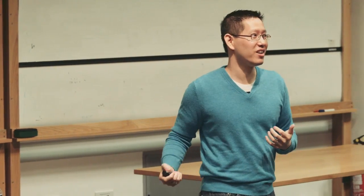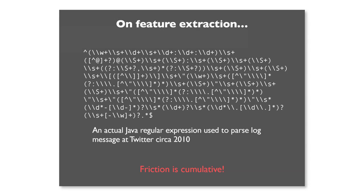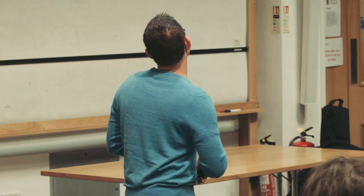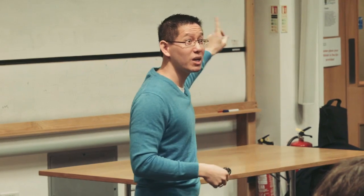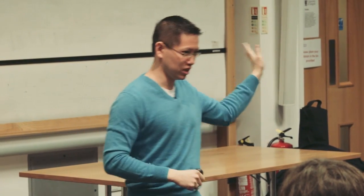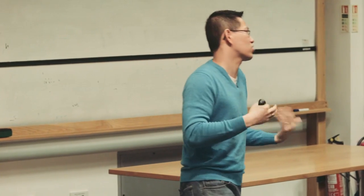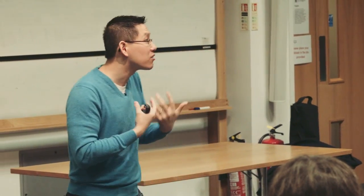Another example: feature extraction. You end up doing feature extraction with something like an actual Java regular expression I dug from the internal Git repos at Twitter — used to parse logs. It's an Apache log format, made even more fun because in Java you have to double-backslash everything, making it twice as long. Mercifully, this has been decommissioned and removed several years ago. All the things I'm telling you about — finding where things are, naming conventions, monstrosities like these — seem like small issues, but they add friction to the development process. They're cumulative. Imagine yourself as a data scientist peppered with these all day long. It slows down development.